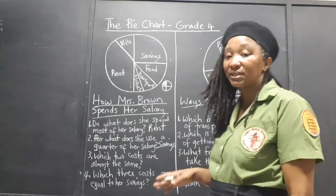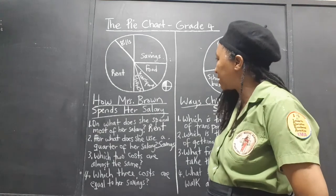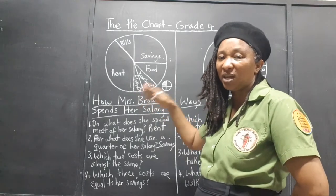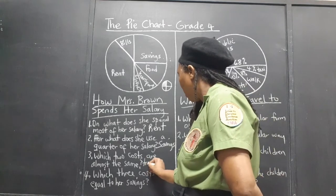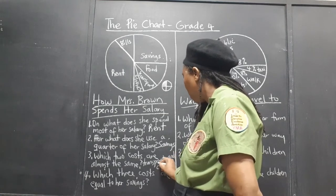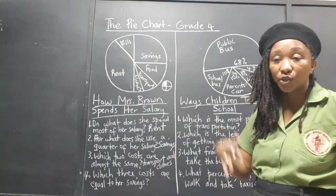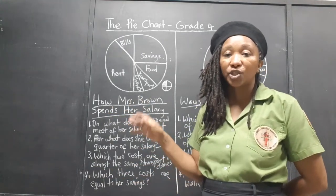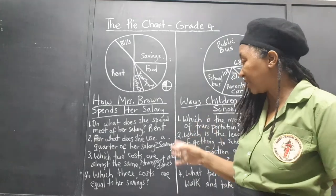Which two costs are almost the same? Looking at the pie, which two slices are almost the same size? Well, transport and clothes — they're pretty close. Not exactly the same, but pretty close. The same money she puts aside for transport, she puts aside for clothes. Maybe she doesn't buy clothes every month, but she puts that money aside to accumulate, so when she needs the clothes she can draw from that fund.